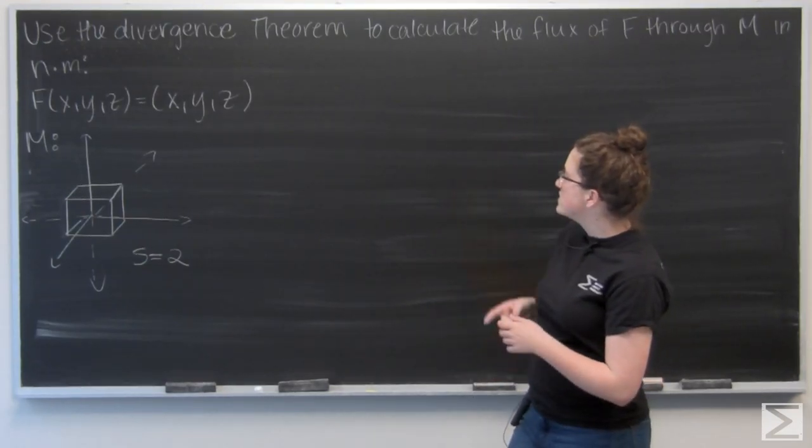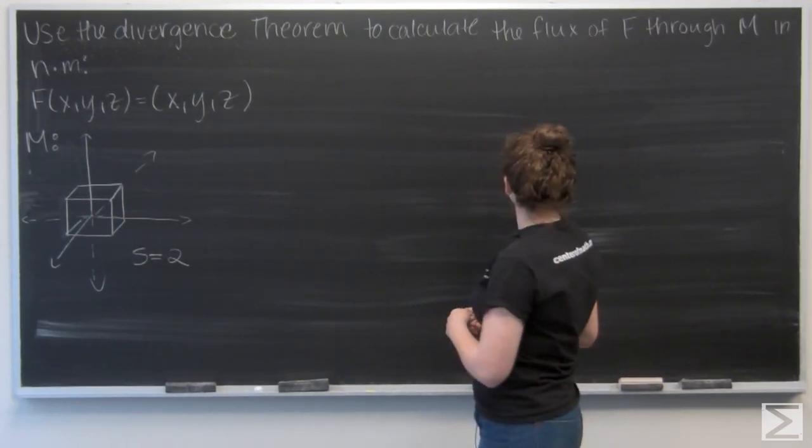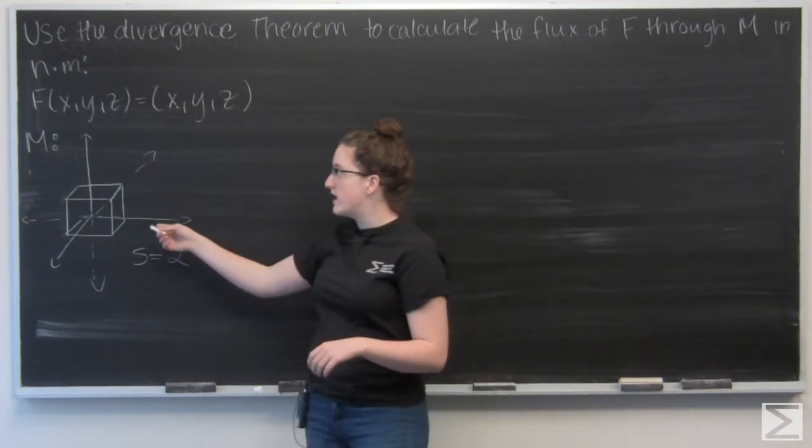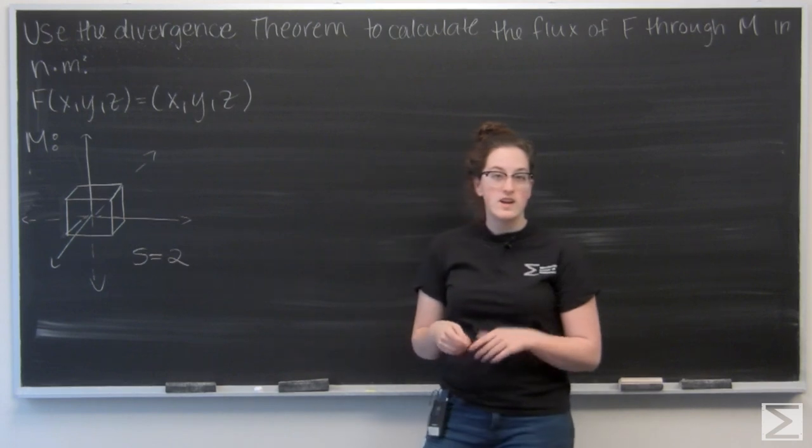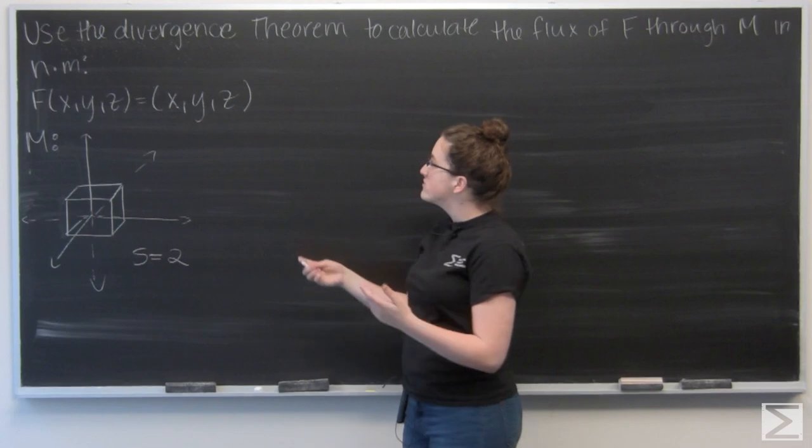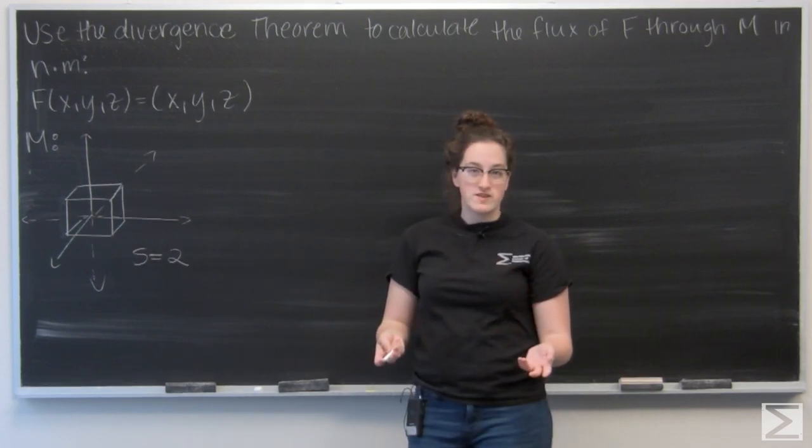This question asks us to use the divergence theorem to calculate the flux of this given vector field F through a given surface M in Newton-meter squared. We're going to use the default outward pointing orientation. Let's recall what the divergence theorem says.